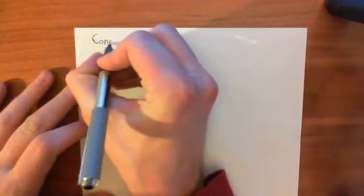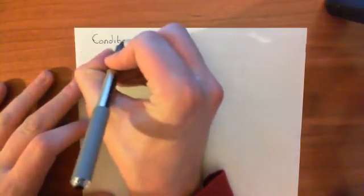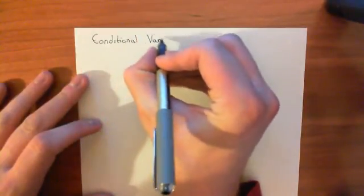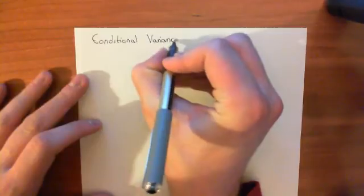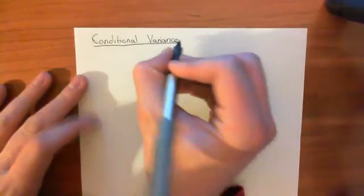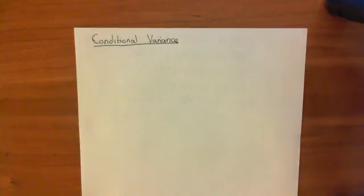After having done many videos on conditional expectation, what we're now going to turn our attention to in this video is conditional variance. It's pretty much the same idea. Basically, what we're going to do is condition on an event having happened, restrict our random variable down to that event, and then take the variance for that new restricted random variable.